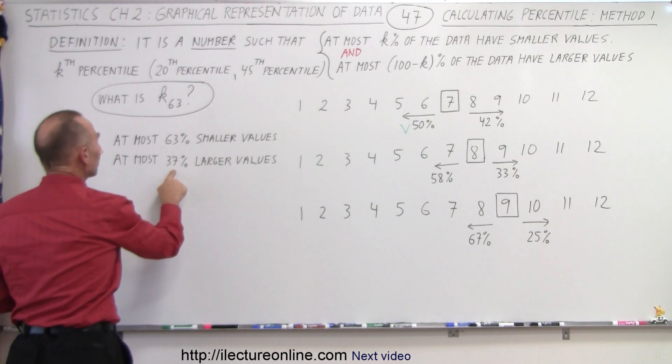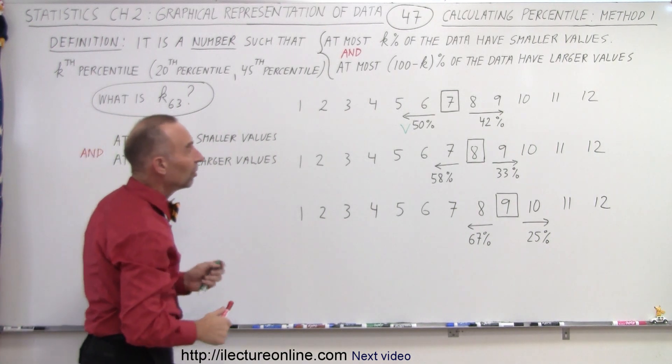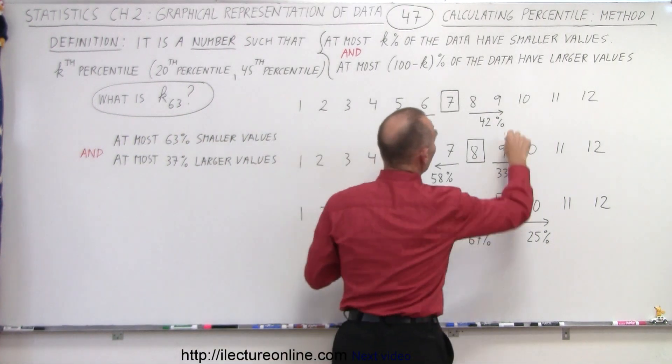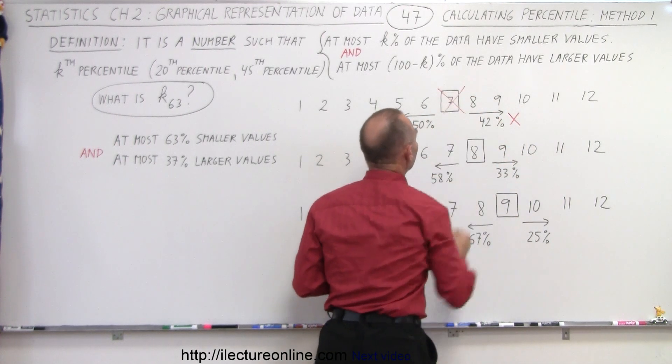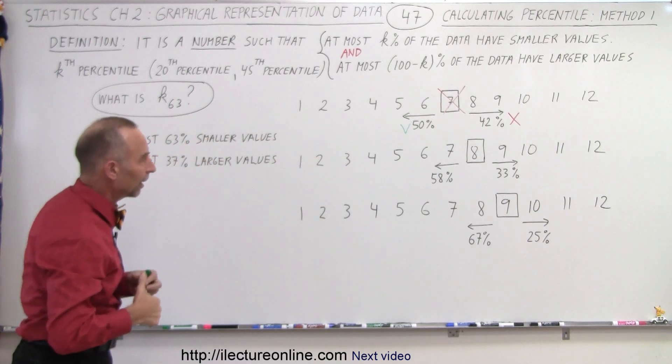At most 37% may have larger values. Since 42% have larger values, that condition is not met. And so therefore, we cannot pick that as the 63rd percentile.